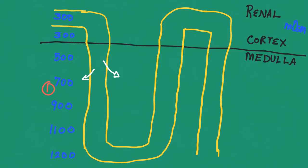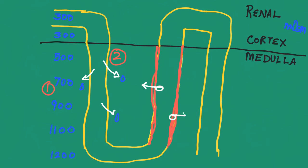The second rule has to do with the fact that the descending limb of the nephron loop is permeable to water, but it is impermeable to salts. The third rule has to do with the ascending limb of the nephron loop. This red line that you see depicts impermeability to water — the ascending limb is impermeable to water. However, it is permeable to salt, so salt is being pumped out of the ascending limb of the nephron loop. That is rule number three.